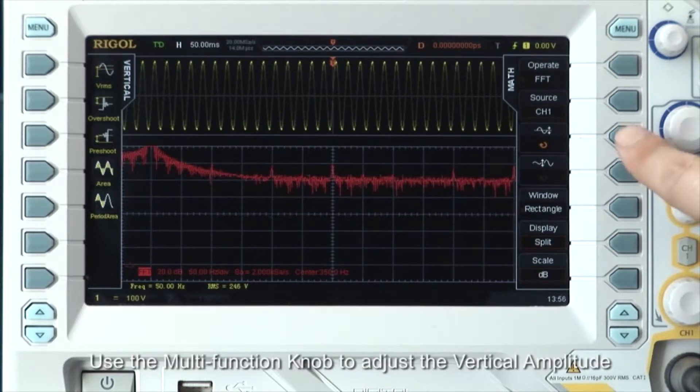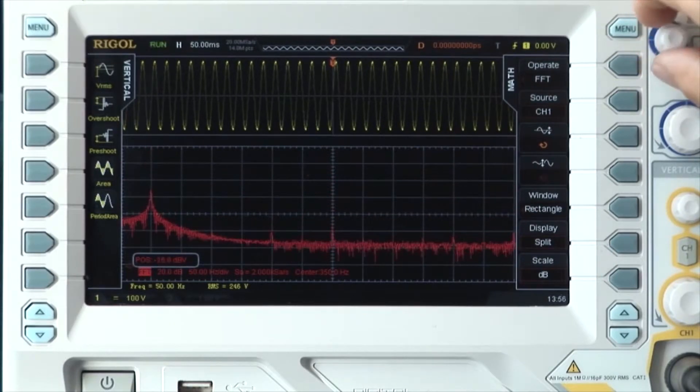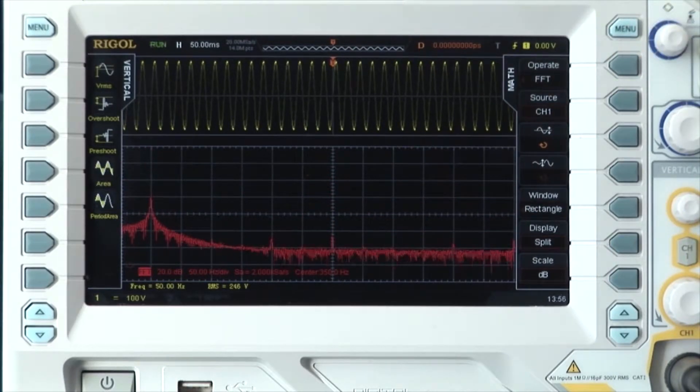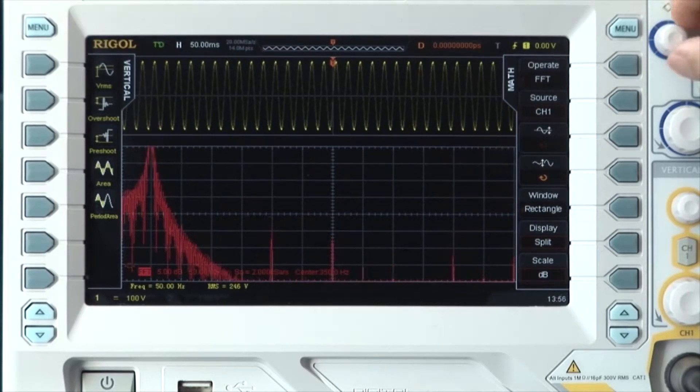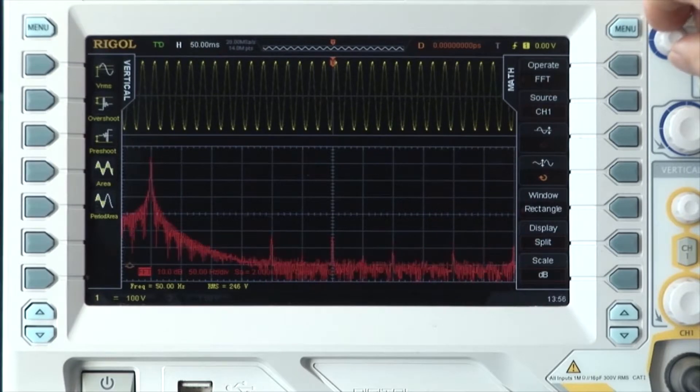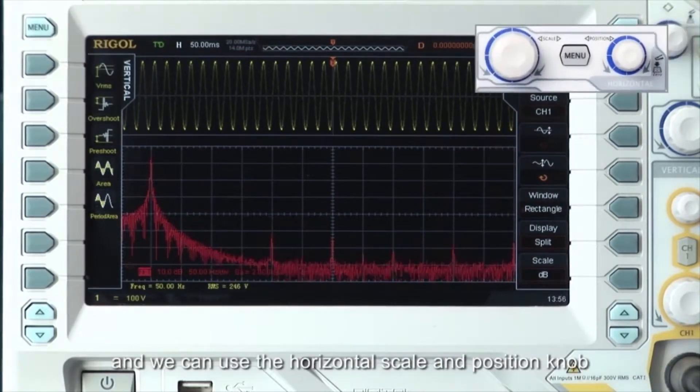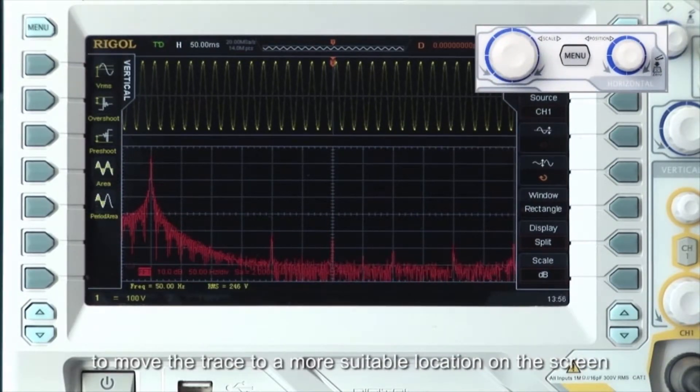Use the multi-function knob to adjust the vertical amplitude and vertical position. The x-axis now denotes frequency. We can use the horizontal scale and position knobs to move the trace to a more suitable location on the screen.